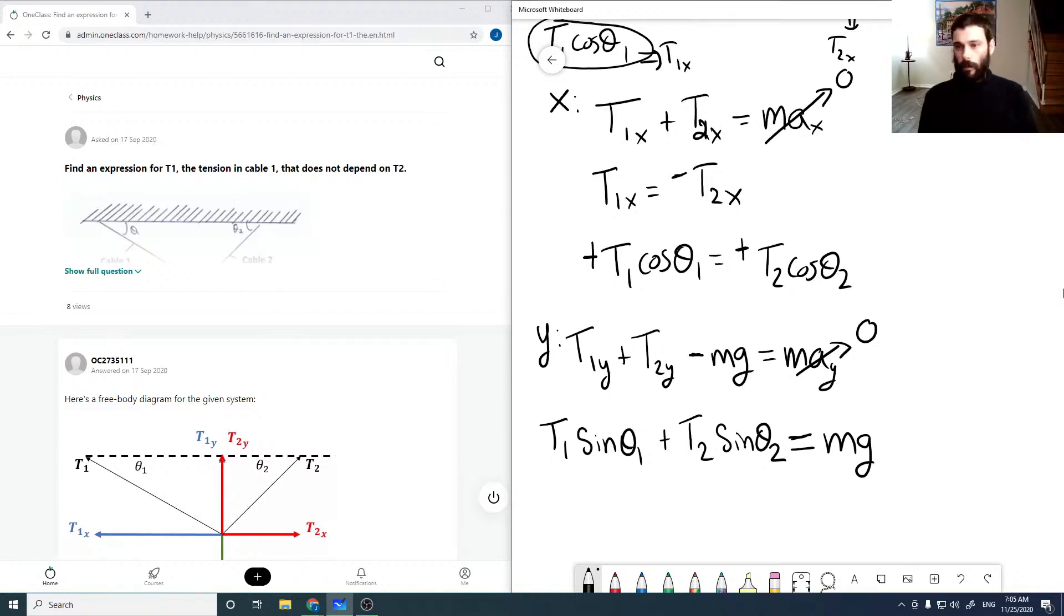So it looks like the best thing to do here is to solve for T2 as T1 cos theta 1 over cos theta 2. Now plugging this into this expression down here, we have T1 sin theta 1 plus T1 cos theta 1 over cos theta 2 times sin theta 2 equals mg.